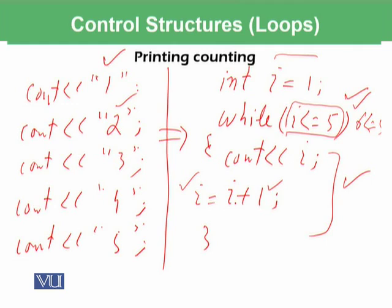However, if you want to print counting until 1000 using separate statements, you would need to write 1000 cout instructions. With a loop, you just need to change the 5 and replace it with 1000, and you are done.